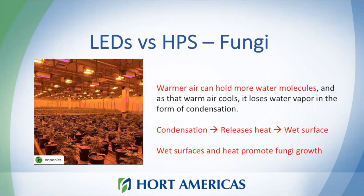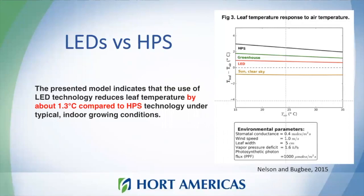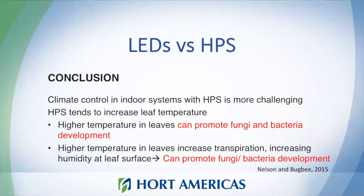All these factors are promoted by high-pressure sodium lamps, and there is research that supports all these statements. Research has demonstrated that LED lamps decrease transpiration by 17% in comparison to high-pressure sodium lamps. As we reduce transpiration, we tend to avoid excessive humidity and also save water. There is also evidence that LED lighting can reduce leaf temperature by 1.3 degrees Celsius in comparison to high-pressure sodium lamps. In conclusion, we can say that high-pressure sodium lamps can create a more challenging environment to avoid fungi and bacteria development.